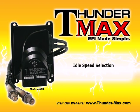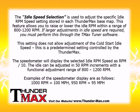Idle Speed Selection. The idle speed selection is used to adjust the specific idle RPM speed settings stored in each Thundermax basemap. This feature allows you to raise or lower the idle RPM within a range of 800 to 1200 revolutions per minute. If larger adjustments in idle speed are required, you must perform this through the T-Max Tuner software. This setting does not allow adjustment of the cold start idle speed.